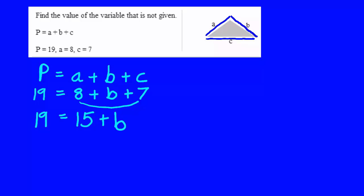Then to find out what B is, we have to subtract off the 15 units, so we can get B by itself.